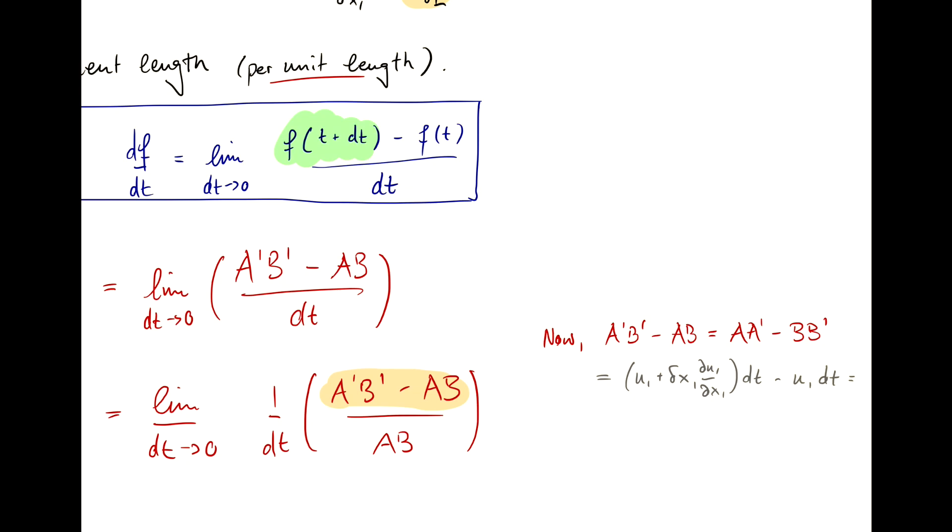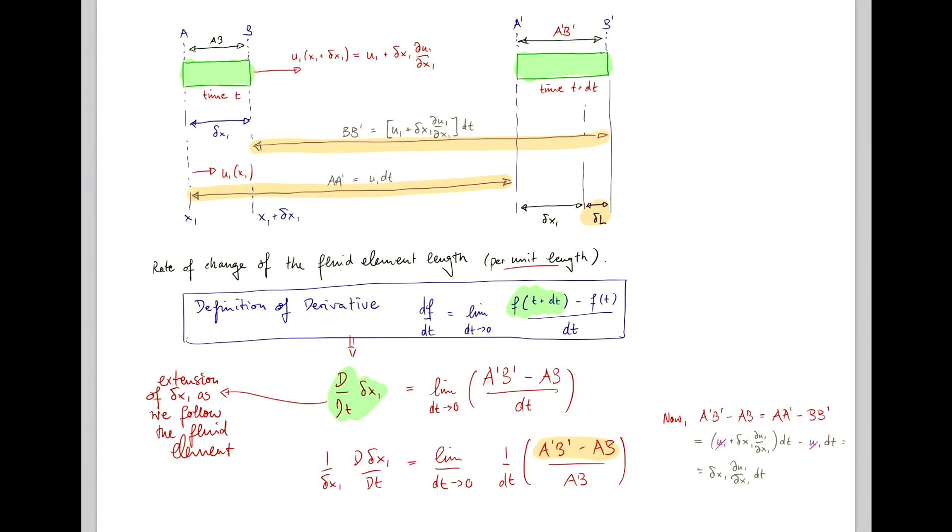So we write that this is just equal to u1 plus delta x1 du1/dx1 dt minus u1 dt, which is simply delta x1 du1/dx1 dt,